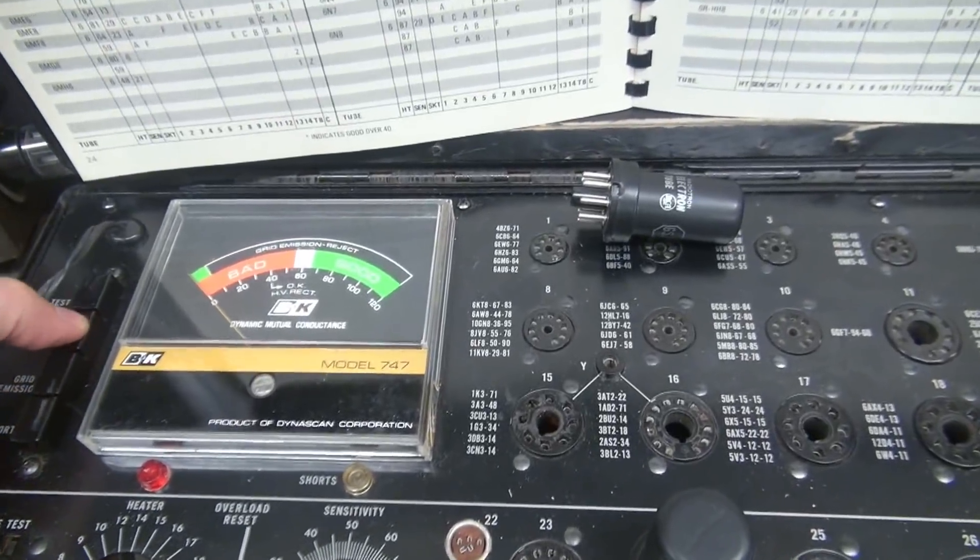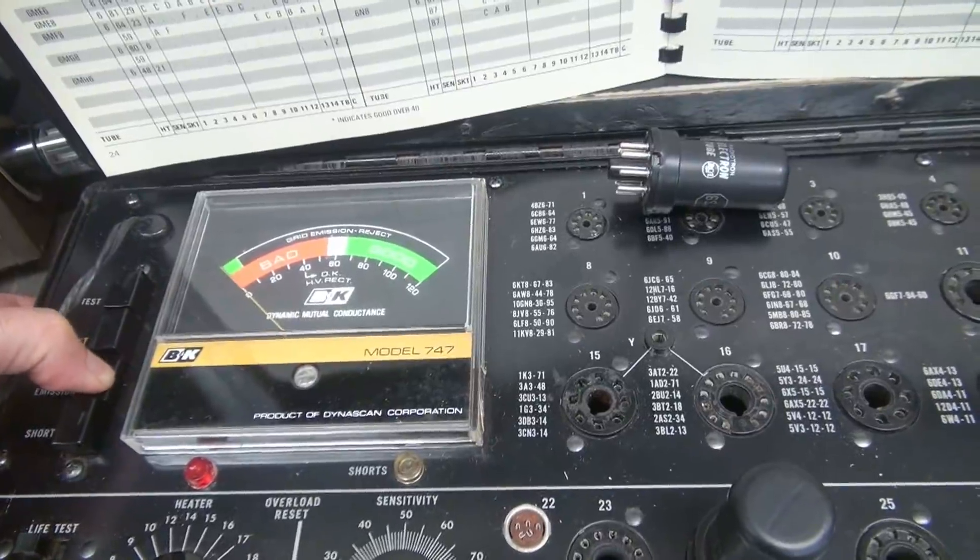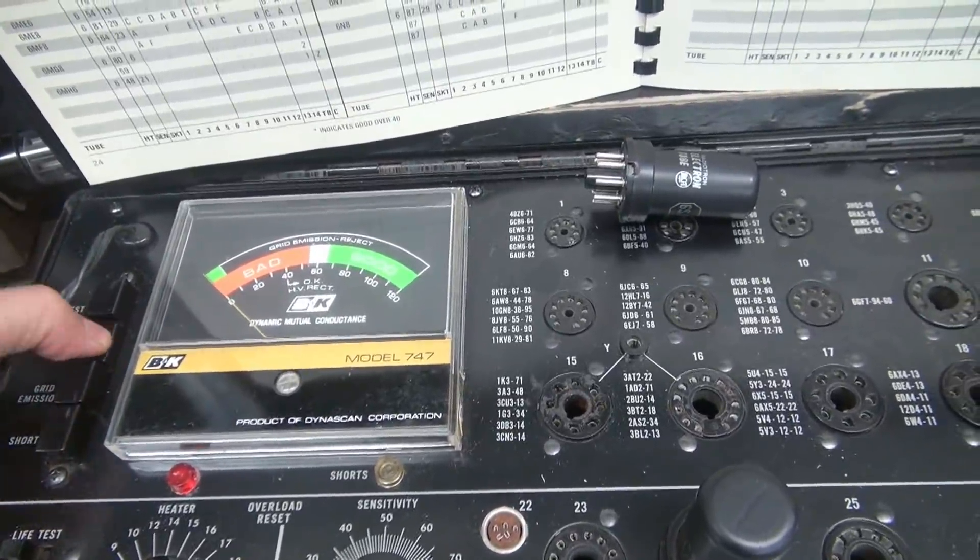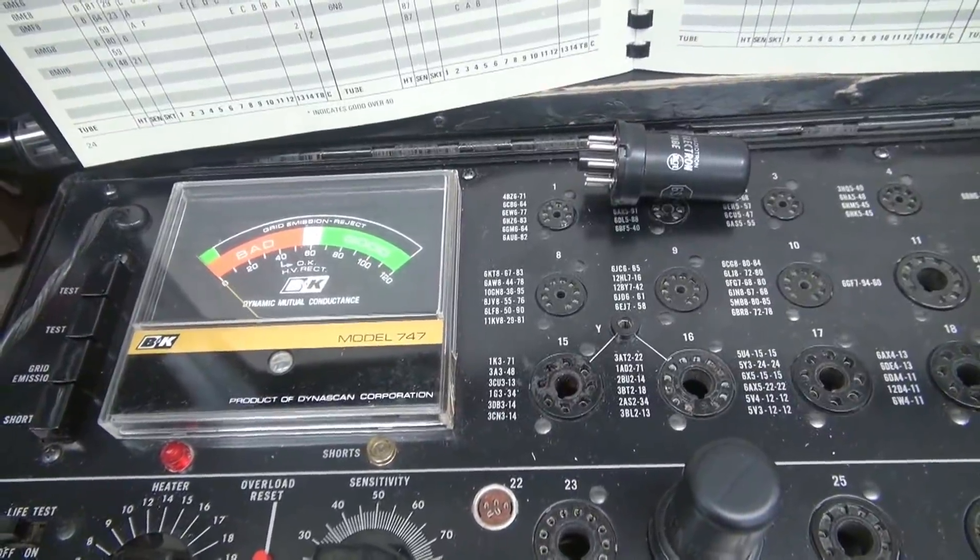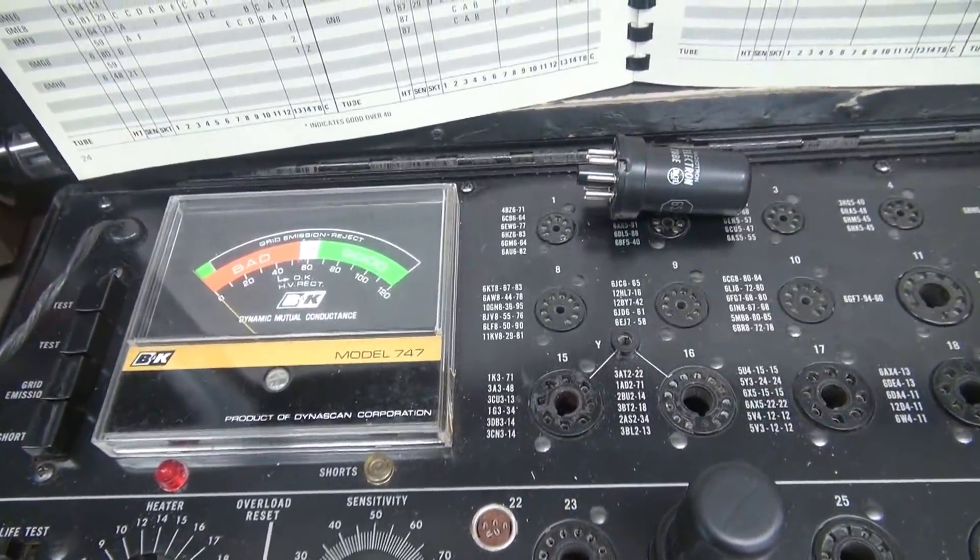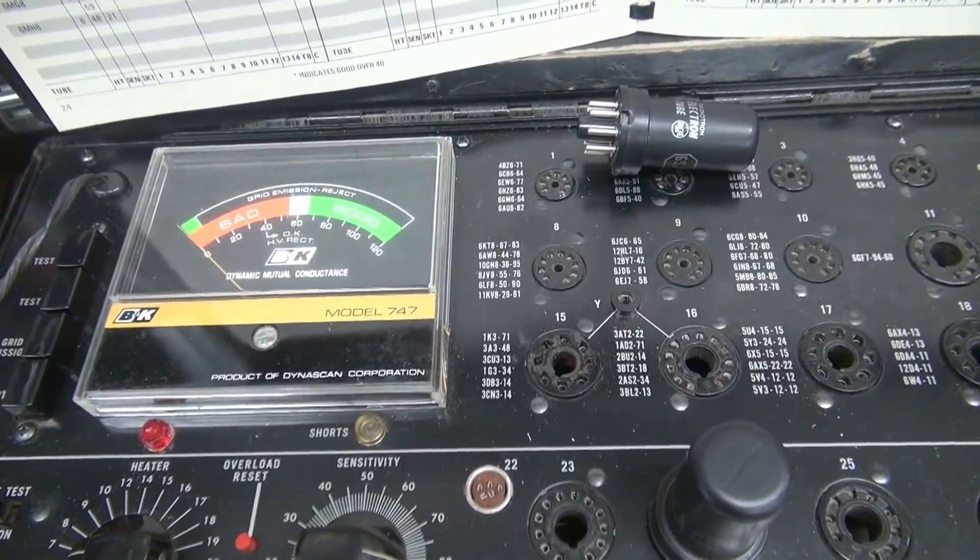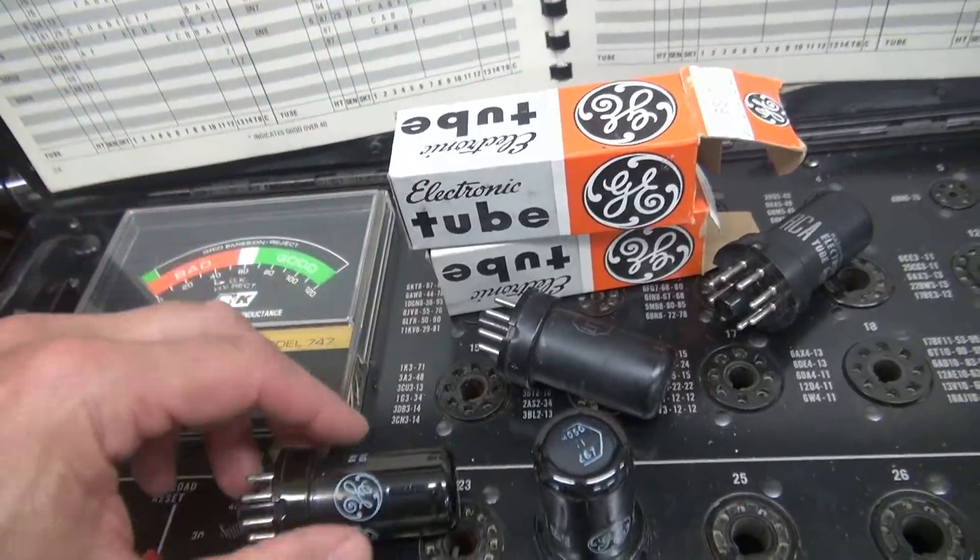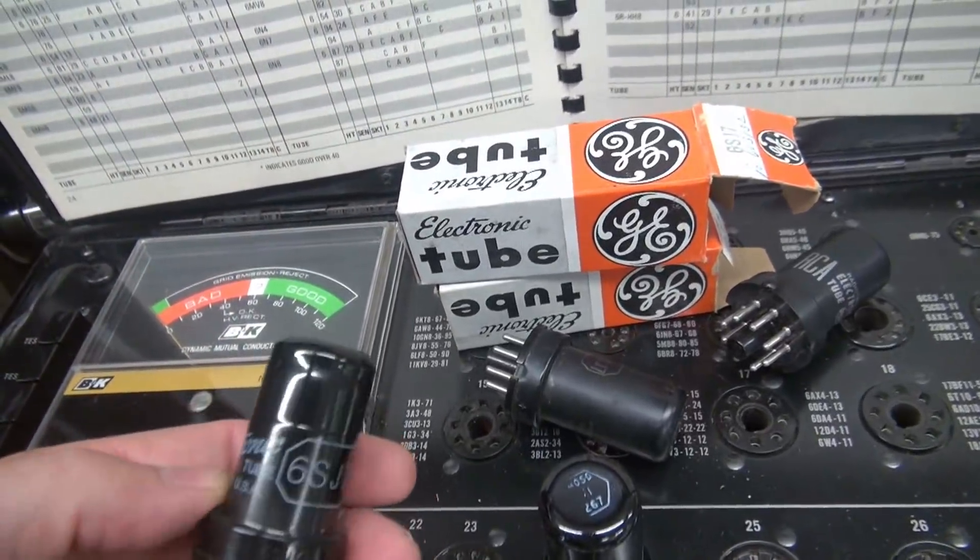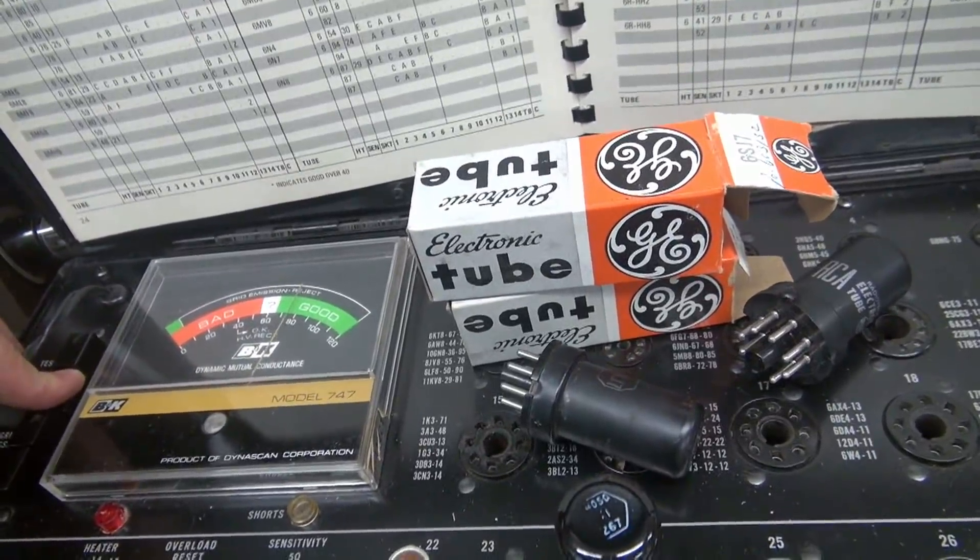Both of the 6SJ7s actually test pretty darn good on my B&K. There's no shorts, no grid emissions, but that really doesn't mean anything when it comes to microphonics. So let's just put in another set and see if that sensitivity goes away. All right, I located some very nice new old stock GEs. We're going to install those. They've never been used and they checked perfectly on the B&K.